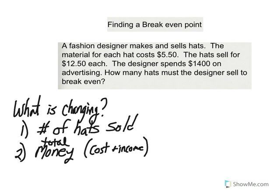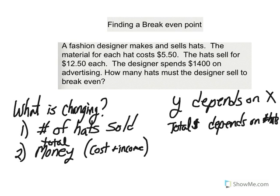Now we just have to figure out which of those two depends on the other. We know Y depends on X. So which of the following two sentences makes sense? The number of hats sold depends upon the total amount of money, or the total amount of money depends upon the number of hats sold? The total amount of money depends on the number of hats — that makes the most amount of sense.